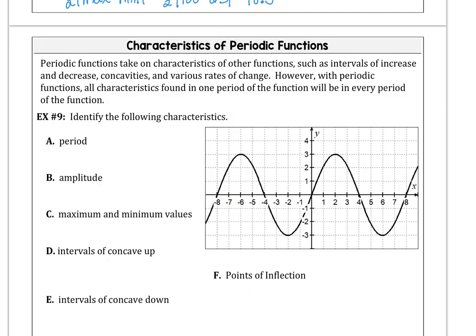In example 9, we're going to talk about the characteristics that periodic functions display. They have intervals of increase, intervals of decrease, concavity, rates of change. Taking a look at the image on example 9, the period appears to go from negative 6 over to positive 2 or negative 2 over to positive 6. So the period is 8 units long. The amplitude is the distance from the x-axis to the maximum or x-axis to the minimum. That puts our amplitude at 3. The max is 3. The min is negative 3.